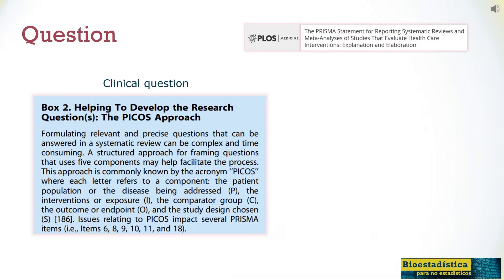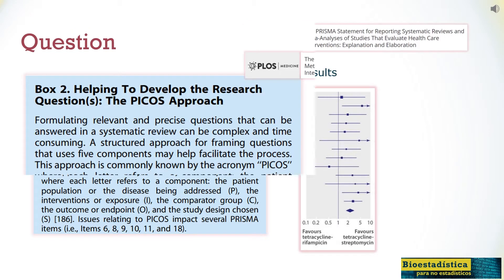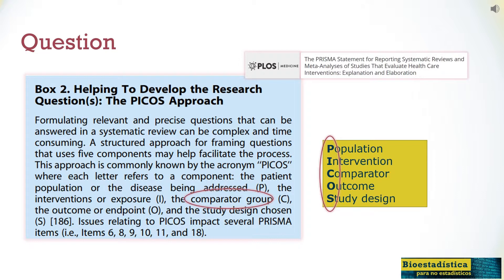We want to explain the PICOS mnemonic about the five components of the health question and the forest plot that summarizes all the information. PICOS includes P for target population or participants that might benefit, I for the intervention studied, C for its comparator, O for the outcome — the evaluated response variable — and S for study, the type of study, usually a randomized trial.